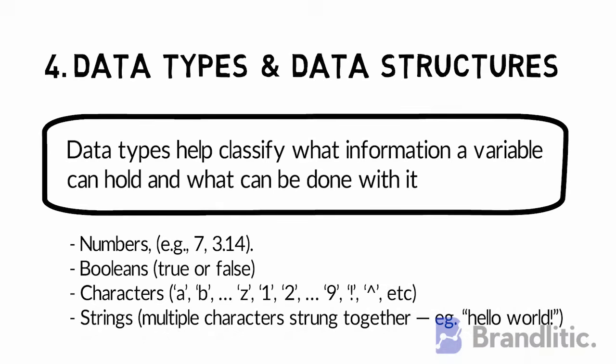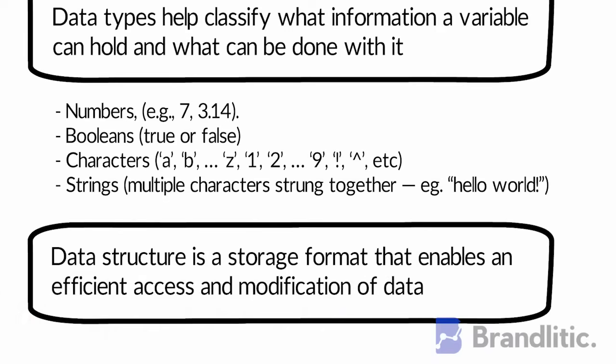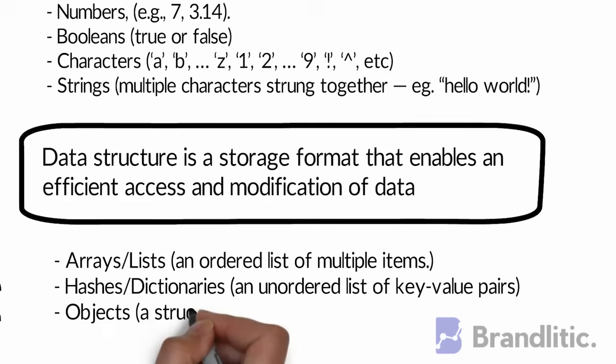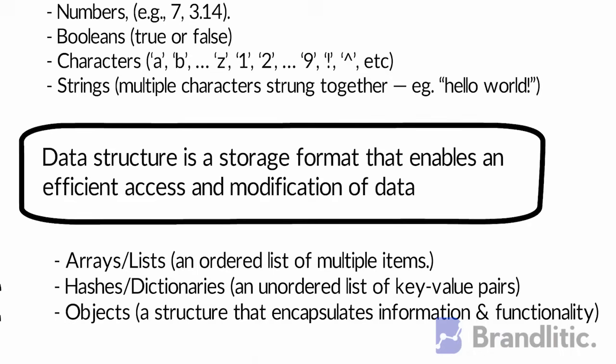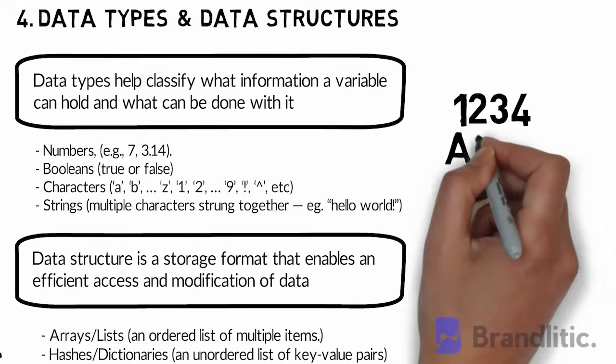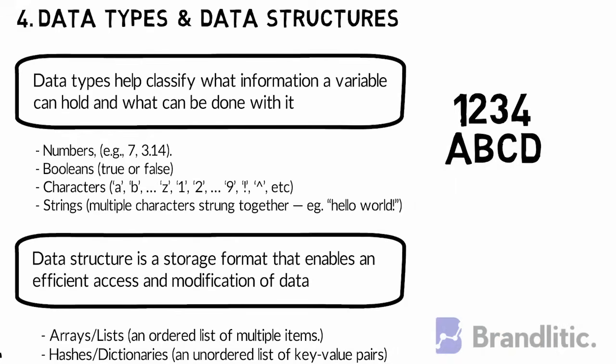On the other hand, data structure is a storage format that enables efficient access and modification of data. Data structures include arrays or lists, hashes, dictionaries, and objects. Since computer programs can't tell the difference between data inputs that read 1, 2, 3, 4 and data inputs that read A, B, C, D, they need to know the data type in order to differentiate between the two.